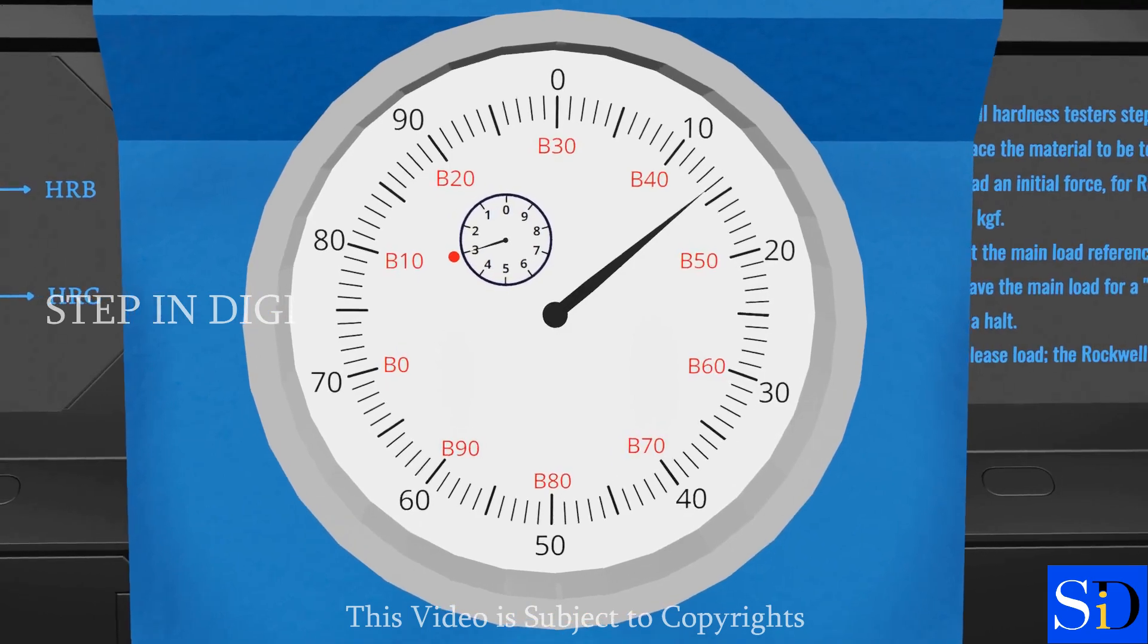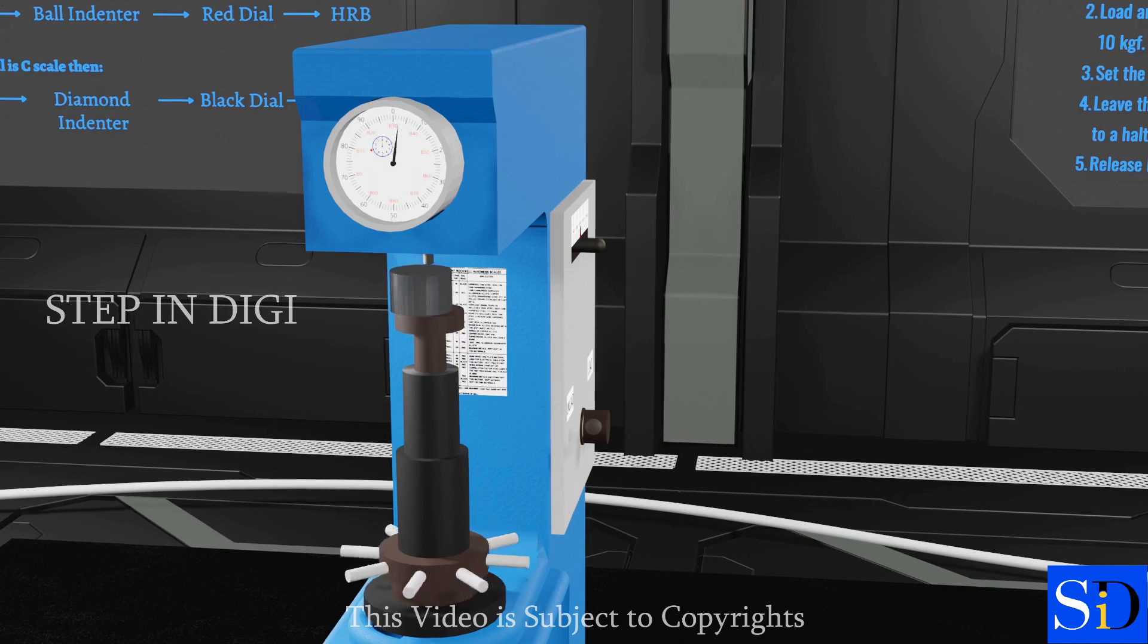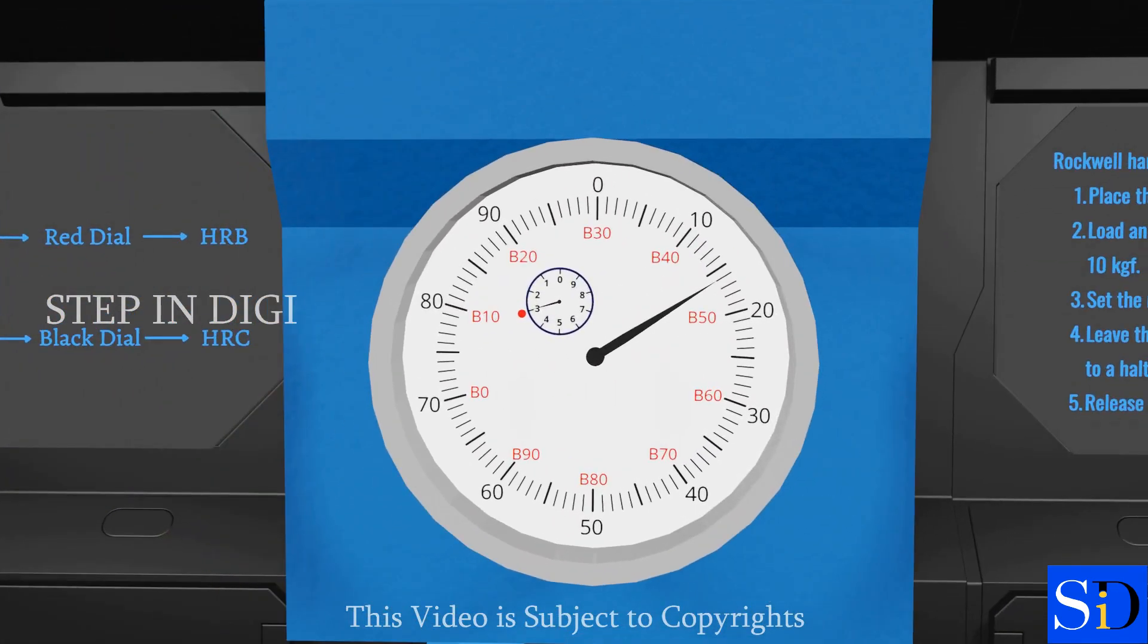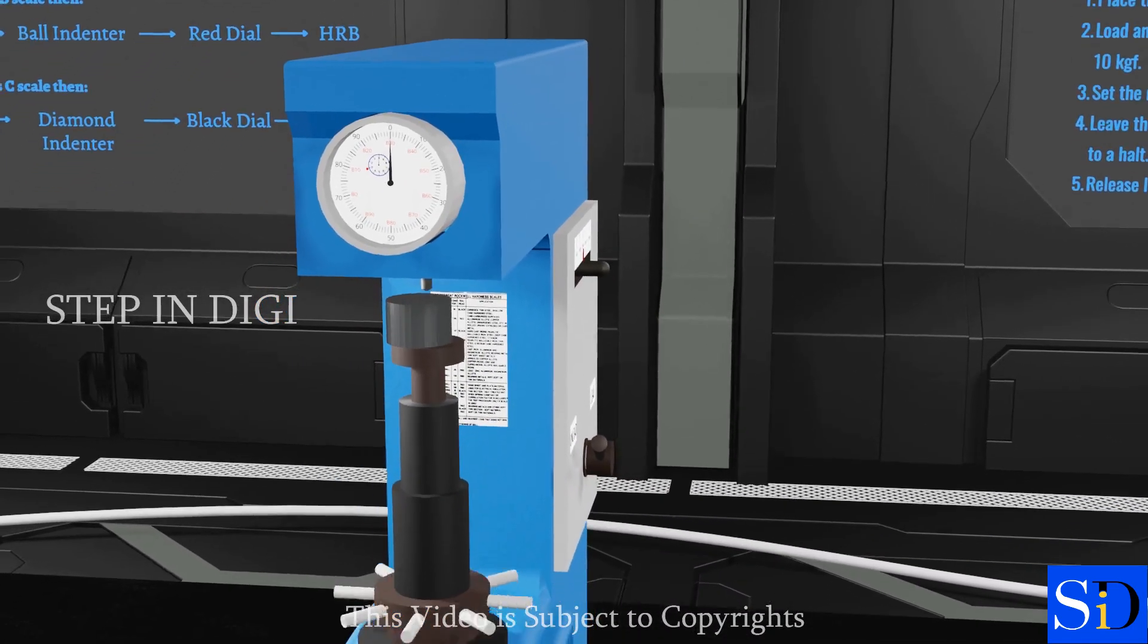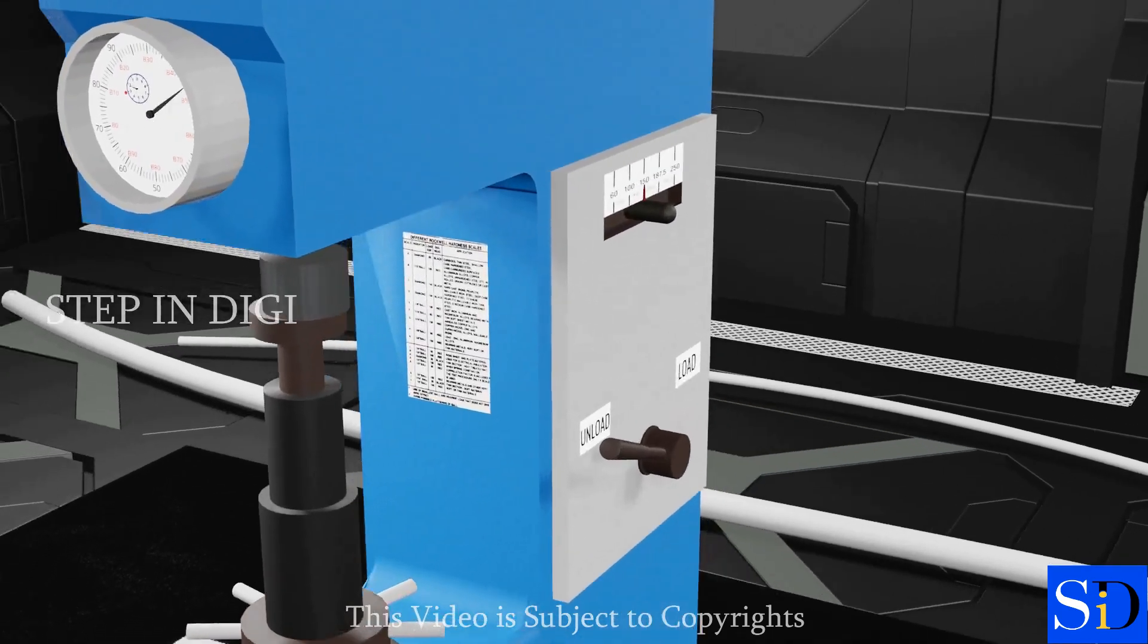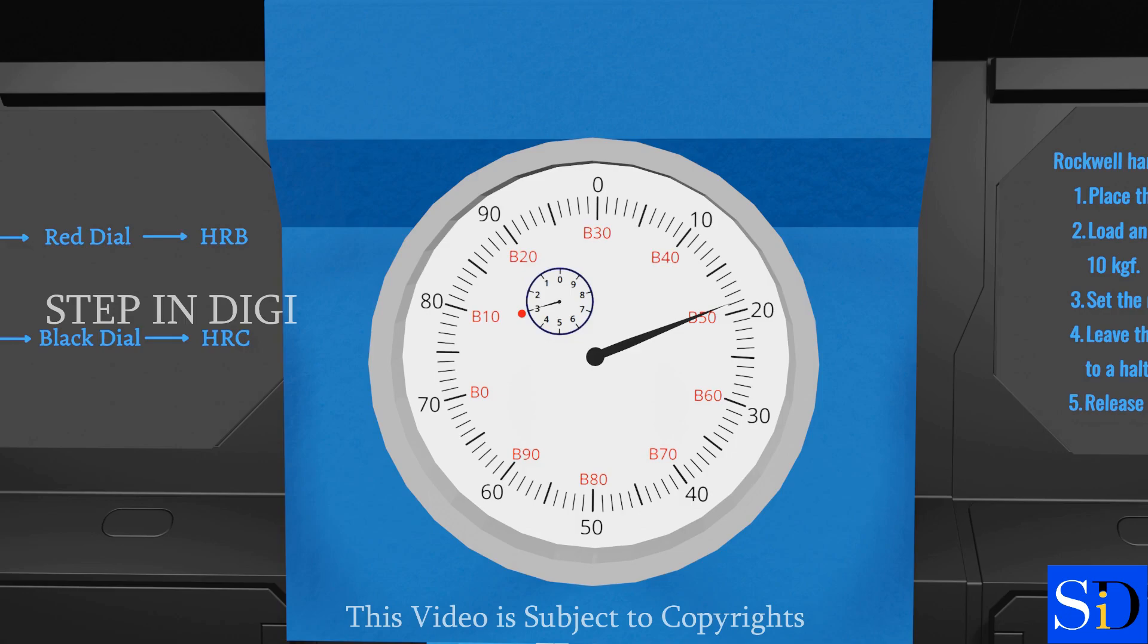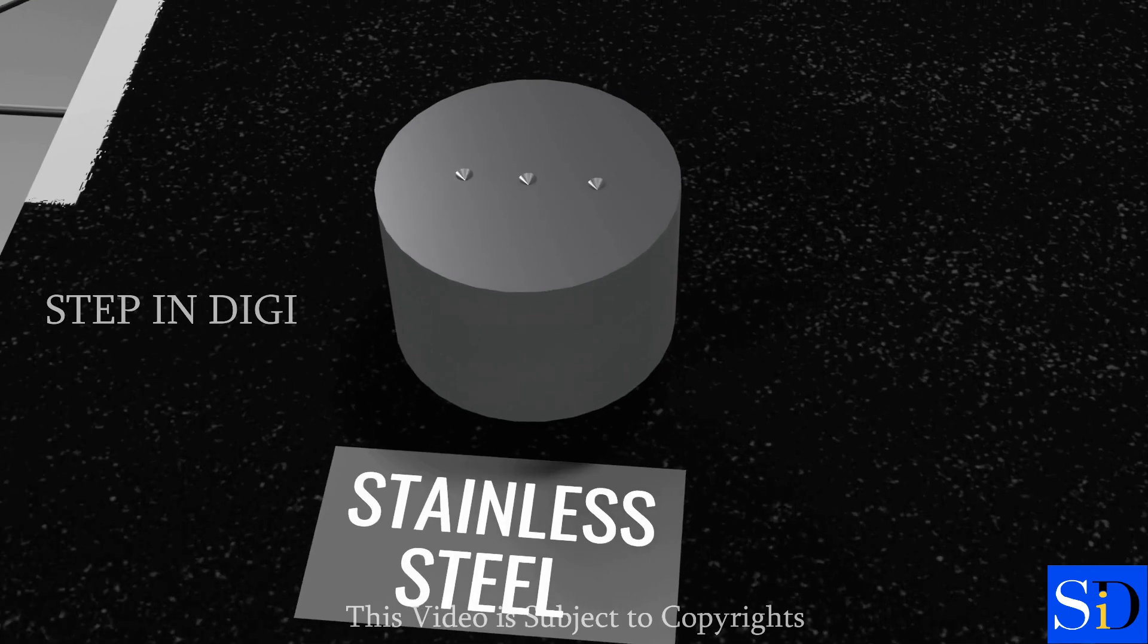Now, let us take two more trials for the same test piece. The dial shows the second trial reading as 16. The third trial reading as 19 is shown on the dial. Now, we can clearly see the cone-shaped indentation formed on the surface of the test piece.